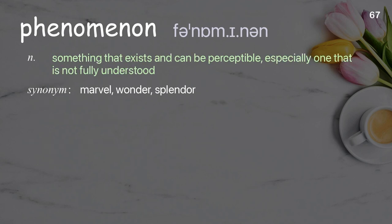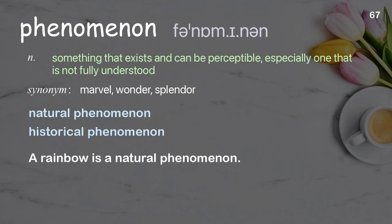Phenomenon. Something that exists and can be perceptible, especially one that is not fully understood. Examples: natural phenomenon, historical phenomenon. A rainbow is a natural phenomenon.